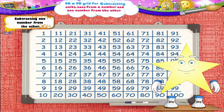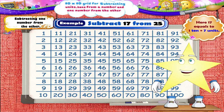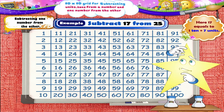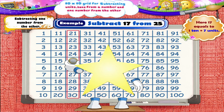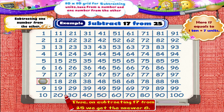Let us solve the next example: subtract 17 from 25. Here, 17 equals 1 ten plus 7 units. Starting from 25, we shall move 1 square to the left to subtract 1 ten — we reach the number 15. Now we shall move 7 squares upwards and reach the number 8. Thus, on subtracting 17 from 25, we get the answer 8.